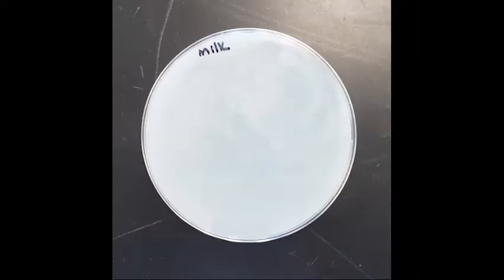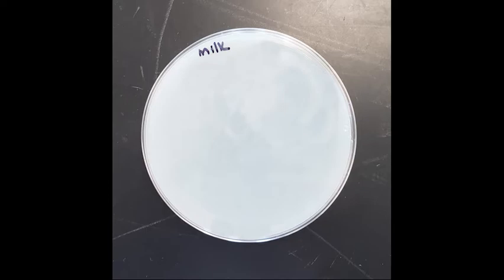Use a petri dish of sterile milk agar. Keep sterile by not lifting the cover lid, which is the larger portion. Notice that the agar in the bottom of the dish appears hazy due to the presence of milk. Bacteria can feed on casein, a milk protein, by extracellular digestion. As milk is digested by the bacterial colony, the agar will become transparent.